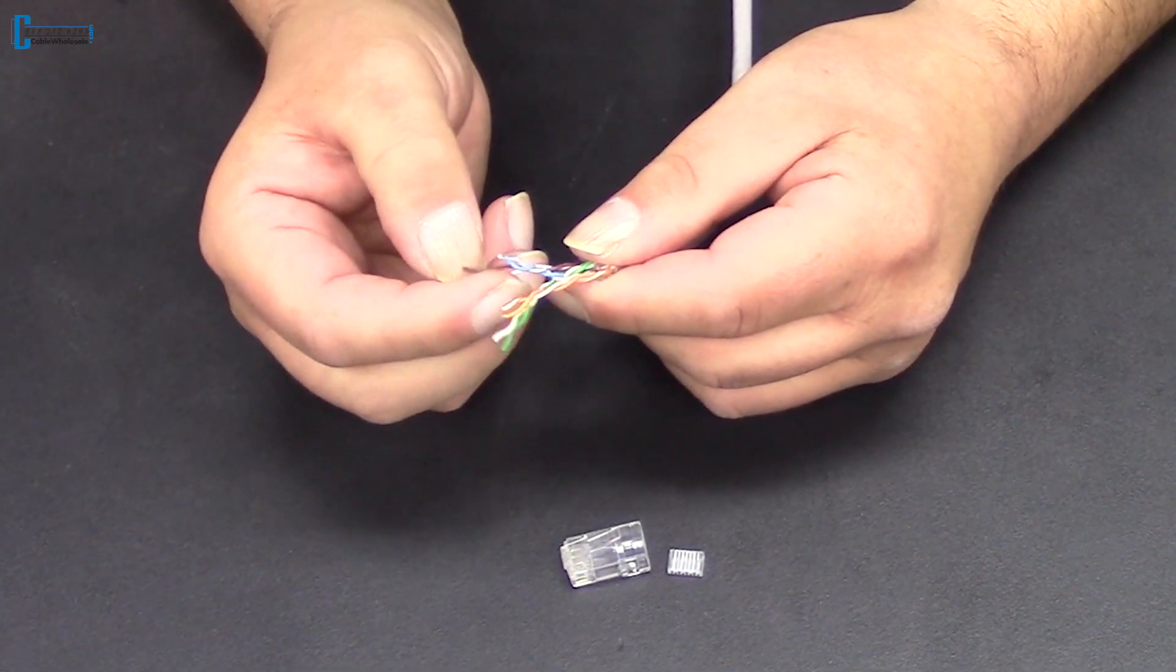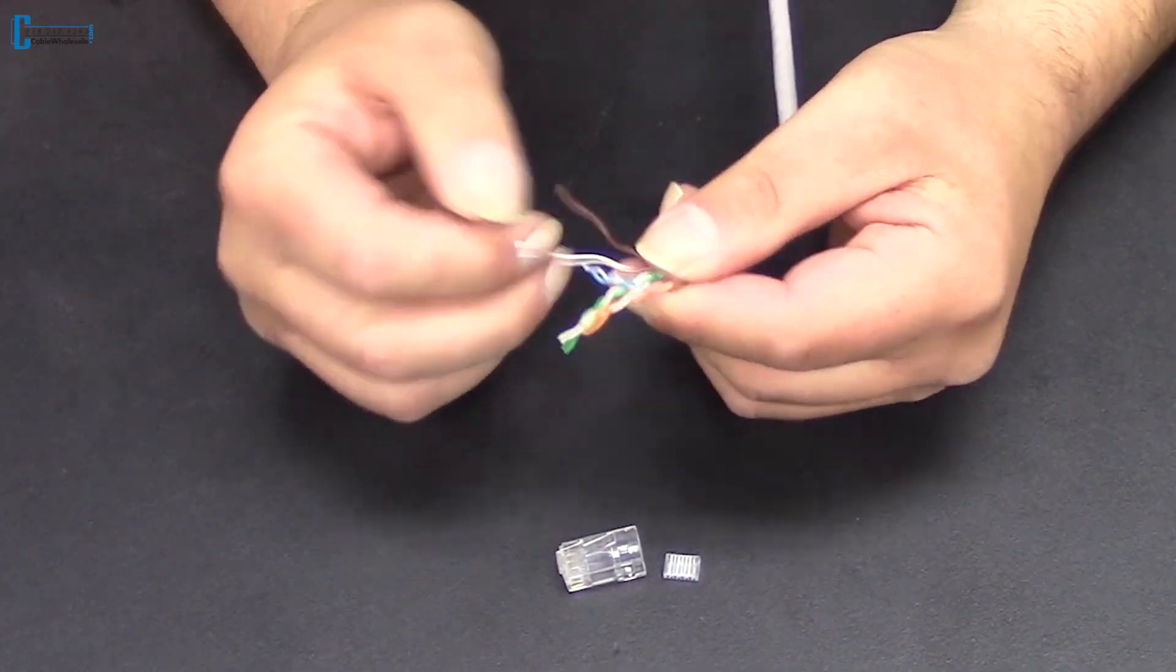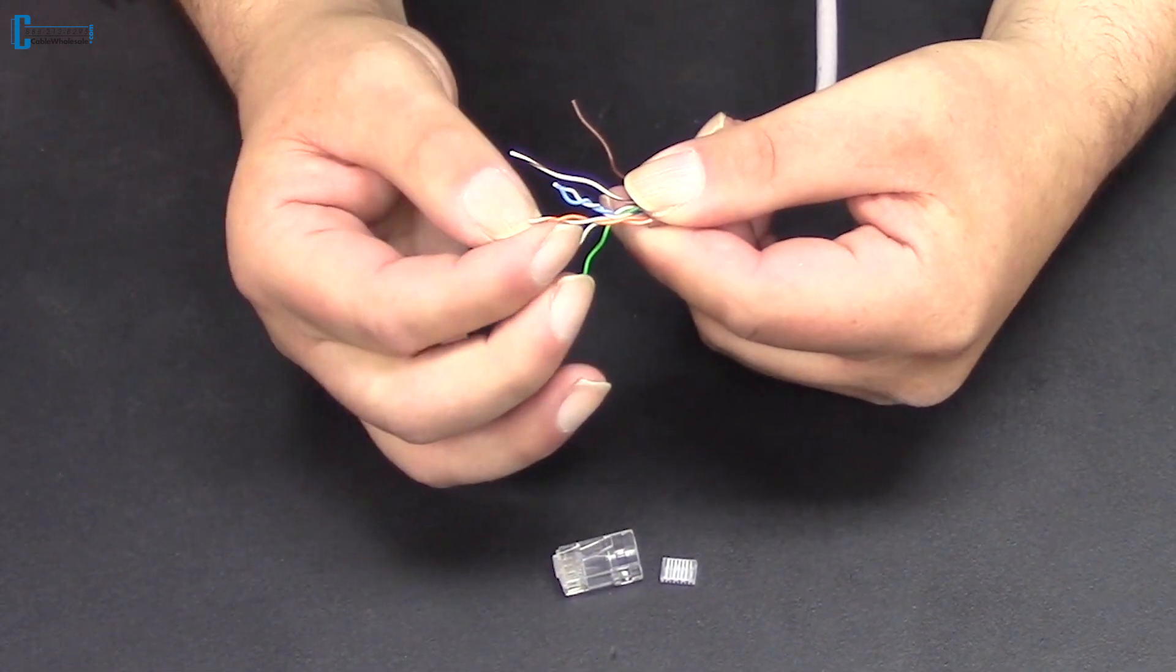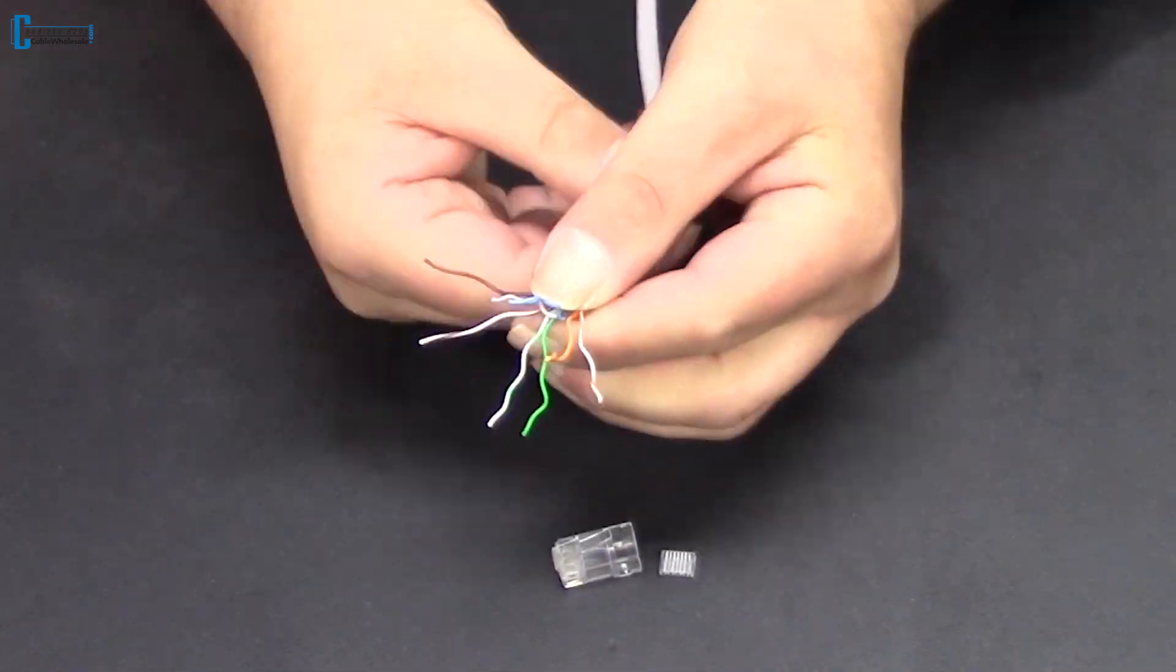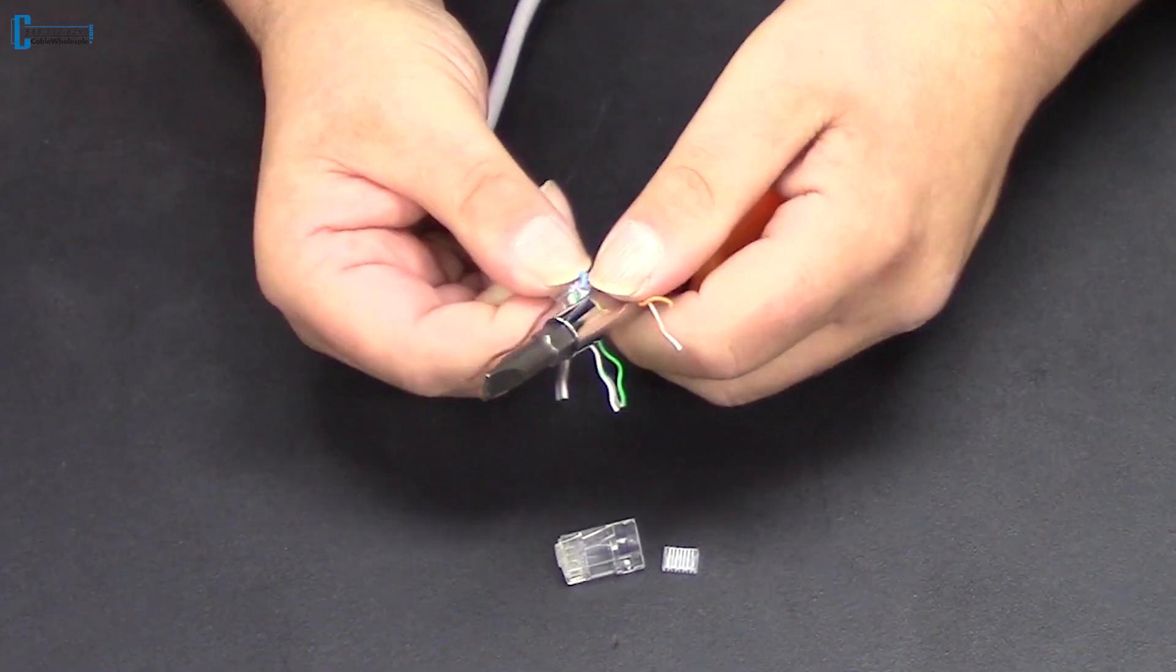Now we'll untwist the four pairs and straighten the individual conductors. I like to use a screwdriver, but you can use your fingers.